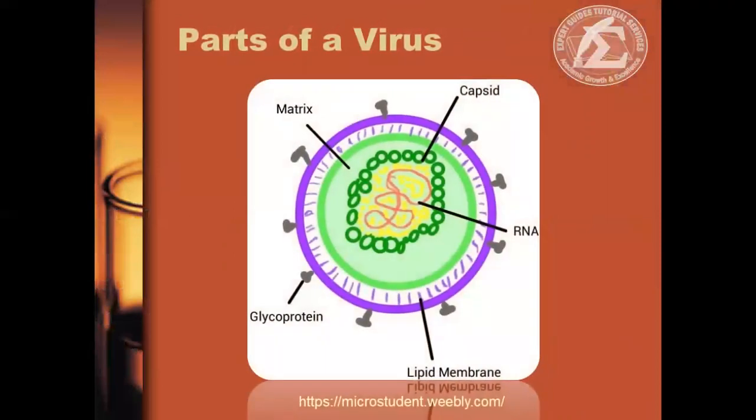Viruses are intracellular parasites — they don't possess the same cellular structures present in bacteria. Typical parts of a virus include the capsid, proteins that coat around the nucleic acids. The genetic material can either be DNA or RNA. Together they are collectively called the nucleocapsid. The glycoproteins function either as transport channels or form viral antigens. The membrane or envelope protects the genetic material when traveling between host cells, although there are naked viruses — those that don't have envelopes.